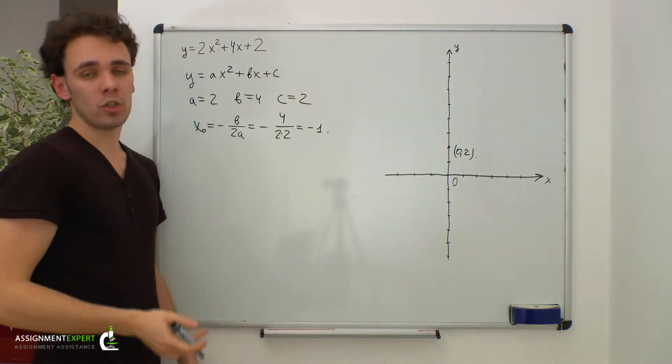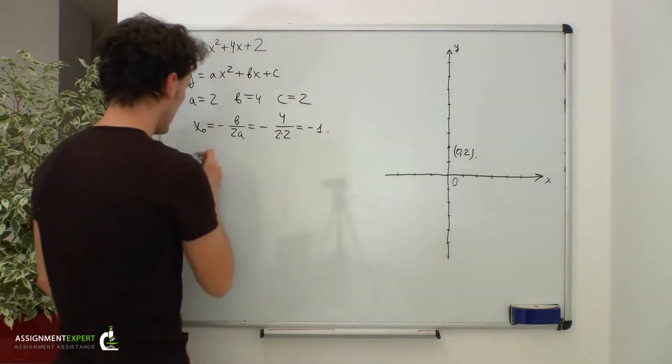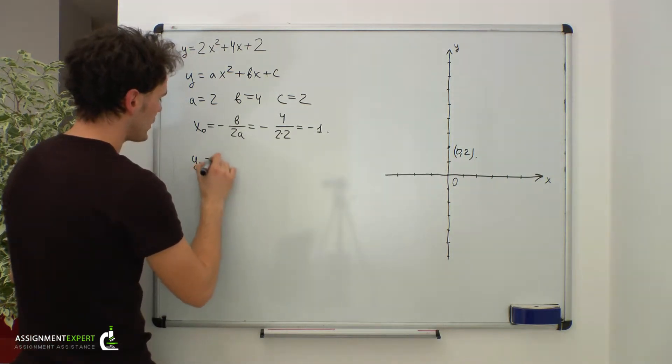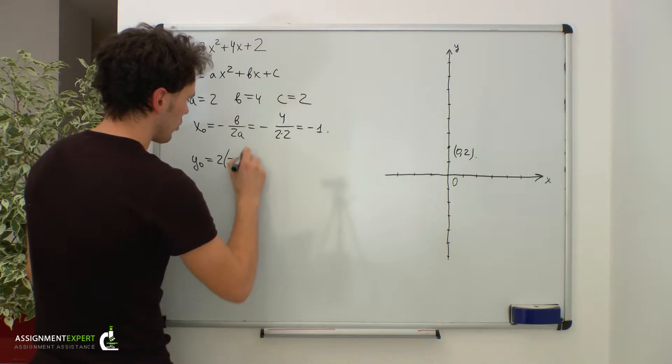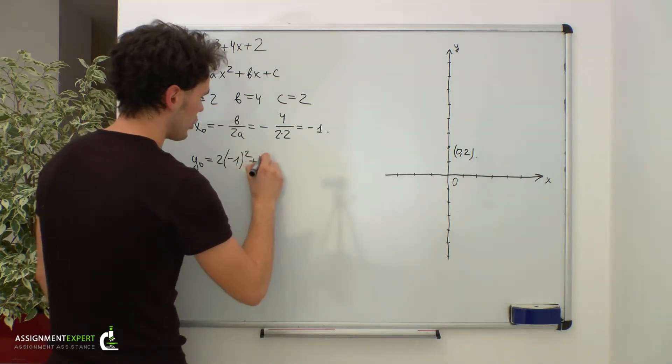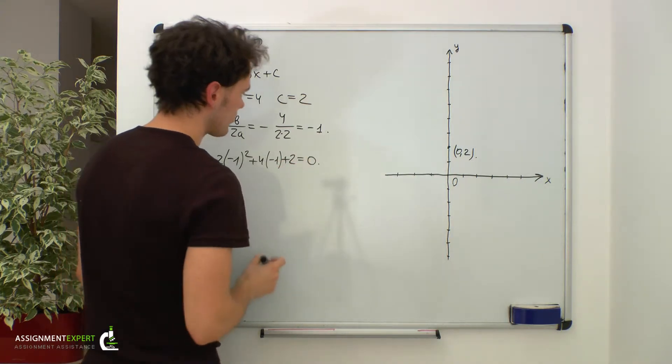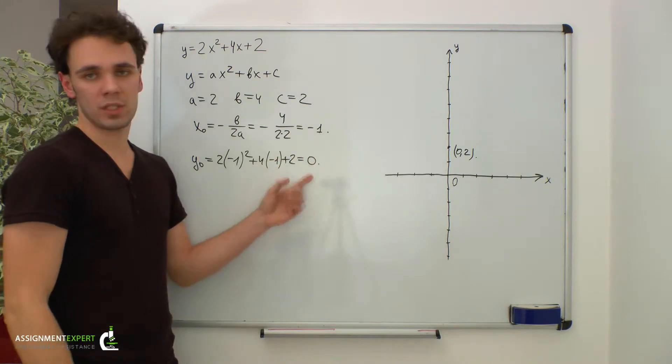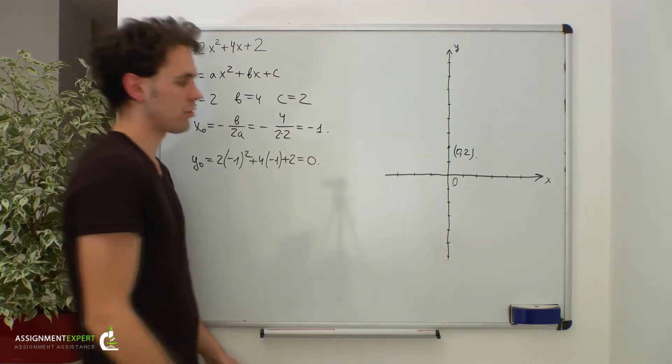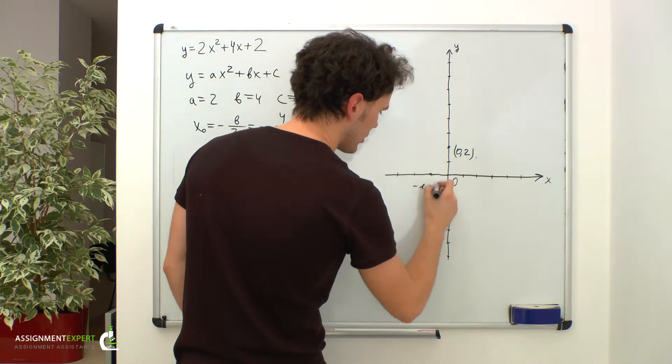To find the y-coordinate of the vertex we need to plug in x0 into the equation. y0 is equal to 2 times negative 1 squared plus 4 times negative 1 plus 2 and equals 0. So the vertex is lying at the point negative 1 comma 0. We can also mark it on the graph. It is right here, negative 1 comma 0.